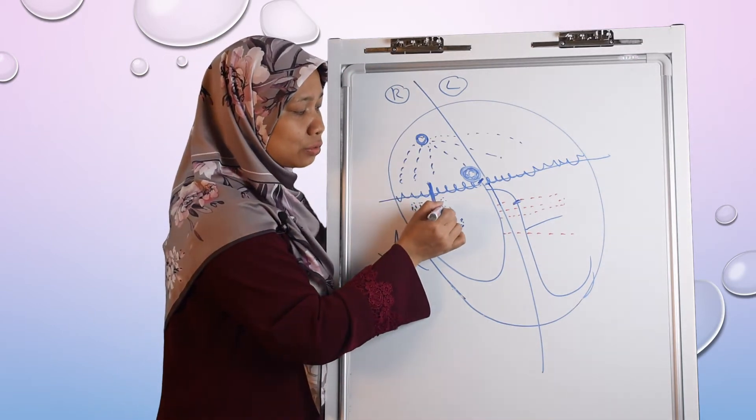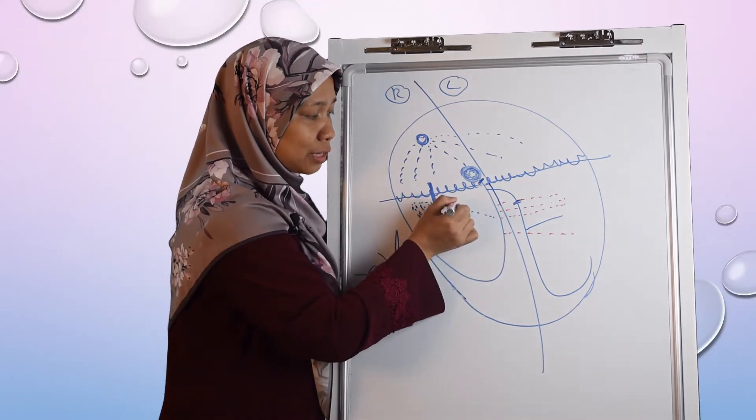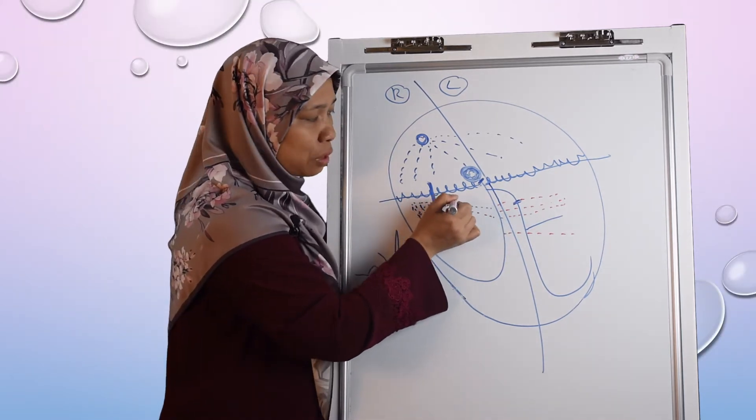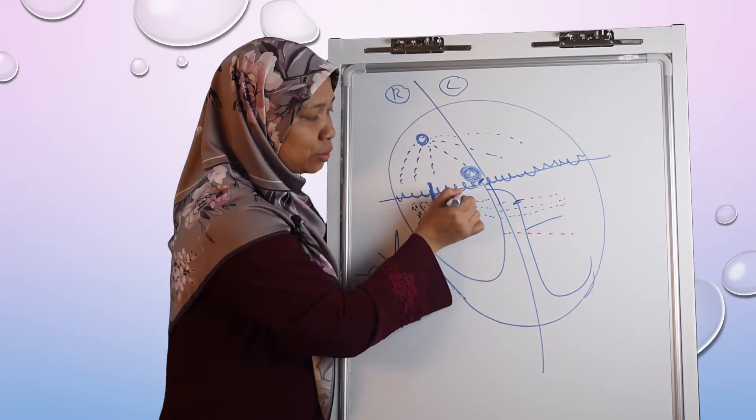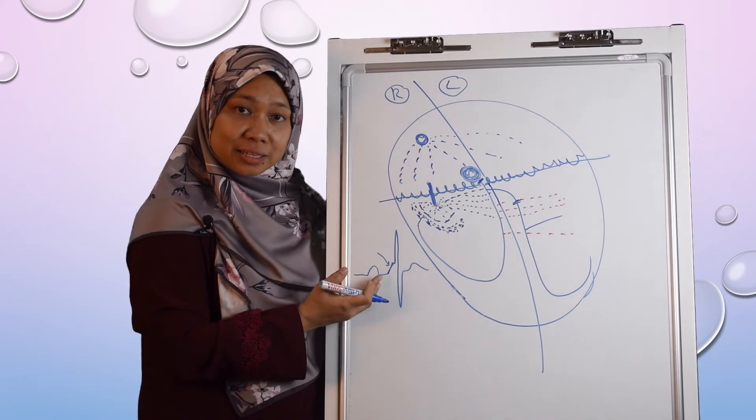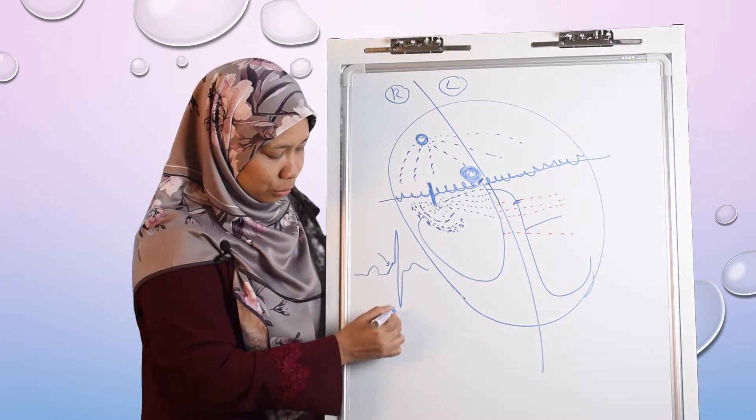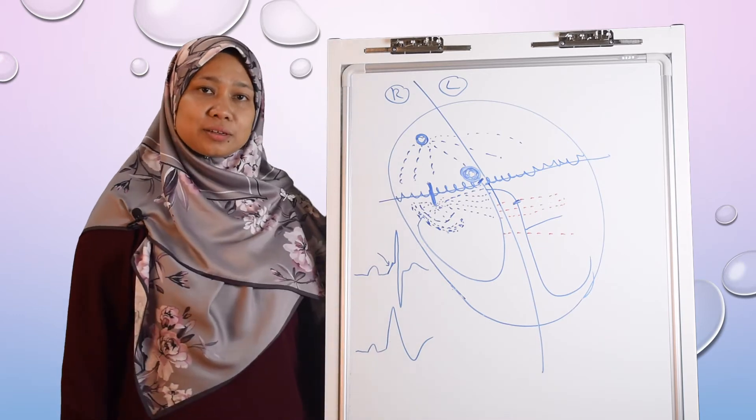the impulse from this accessory pathway will continue to propagate and now it's not going to be stopped by the AV node impulse. So what happens, instead of seeing a delta wave here, it will become a full-blown broad QRS complex.